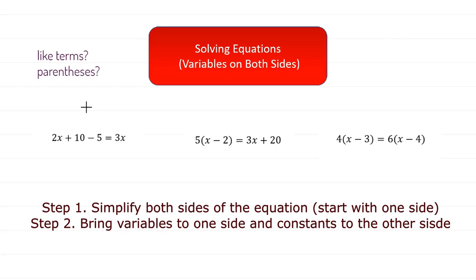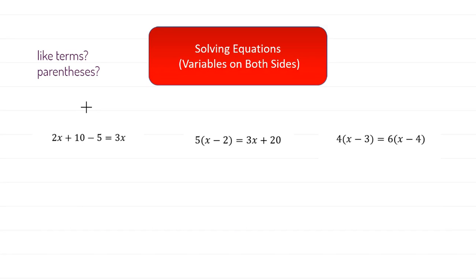Make sure the other side doesn't have anything that we could simplify either. So the first step is just simplify — make sure there are no like terms to combine, no parentheses to work with, everything is as simple as possible. Then after that, we want to bring all the variables to one side and everything else — the constants — to the other side of the equation.